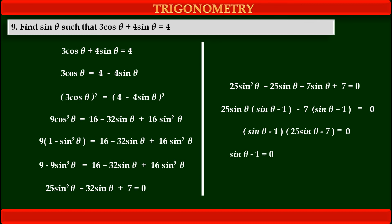That means either the first bracket sin theta minus 1 equals 0, giving sin theta equals 1, or the second bracket 25sin theta minus 7 equals 0, giving sin theta equals 7 upon 25. So we have two values of sin theta: one is 1 and the other is 7/25. Both values are valid and permissible because the value of sin theta must lie between minus 1 and 1, and both values satisfy this condition.